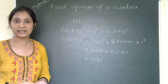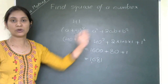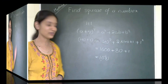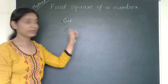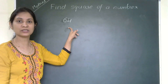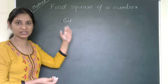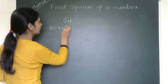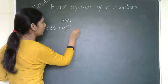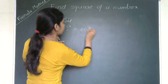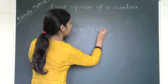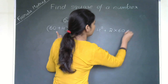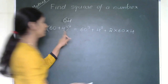Let us move to one more example — how we can use (a + b)² to find the square of a given number. I am taking 64. In order to apply (a + b)², we can split 64 for our convenience as 60 plus 4. So (60 + 4)² equals 60² plus 4² plus 2 into 60 into 4.